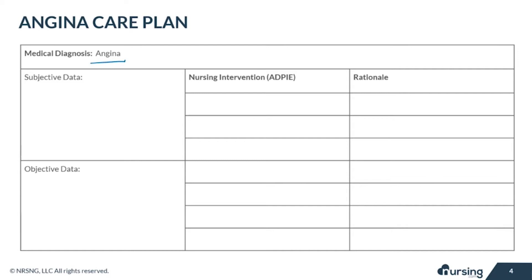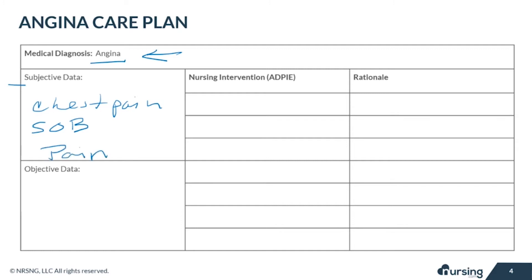At the top you can see the medical diagnosis. Let's think of some of the subjective data your patient may present with. Subjective data is based on the patient's opinion or feelings and really cannot be measured by you. Subjective data for this will include chest pain and dyspnea on exertion or shortness of breath. Included in the subjective data should be a full pain assessment, maybe using a scale like OLD CARTS. Also super important to ask the patient if they have taken any aspirin or nitroglycerin.